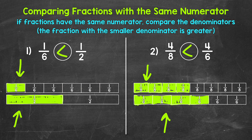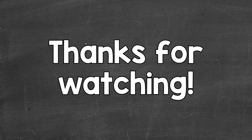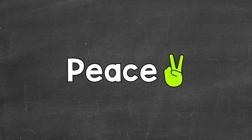We can read this comparison from left to right as: four-eighths is less than four-sixths. So there you have it — that's how to compare fractions with the same numerator using fraction strips. Just remember, if fractions have the same numerator, compare the denominators. The fraction with the smaller denominator is greater. I hope that helped. Thanks so much for watching. Until next time, peace.